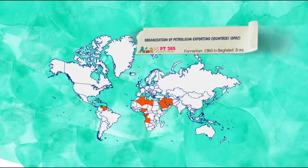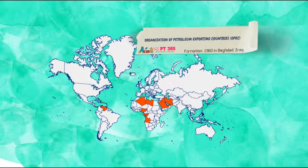Welcome to IASPT 365. Today we will know about Organization of Petroleum Exporting Countries, or OPEC. OPEC was formed in 1960 in Baghdad, one of the cities of Iraq.